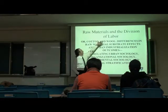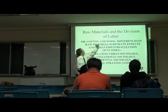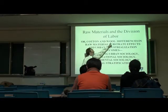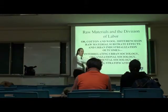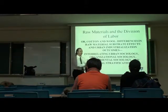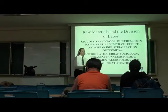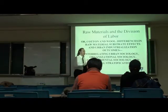How would I operationalize raw materials in the division of labor? I looked at mostly cotton and wool. Cotton is very minimal — you can expand cotton very easily as a fiber. Wool is on an animal. You cannot expand sheep very fast; if you do, they get sick and the quality of wool goes down, so it's far more expensive.